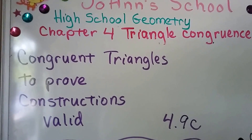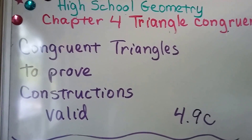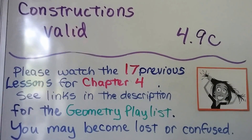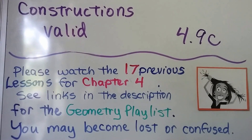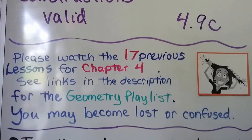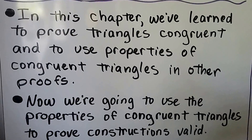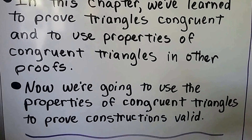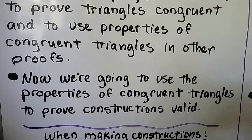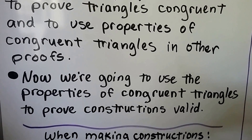Congruent Triangles to Prove Constructions Valid — this is section 4.9C, the last video for chapter 4. There are 17 previous videos for this chapter; you can go to the geometry playlist linked in the description and watch the ones you've missed. In this chapter, we learned to prove triangles congruent and to use properties of congruent triangles in other proofs. Now we're going to use those properties to prove constructions valid.